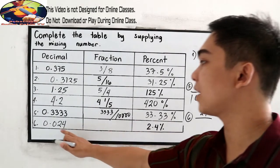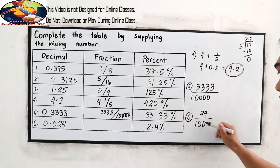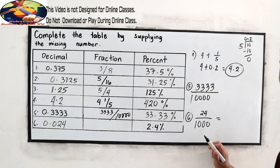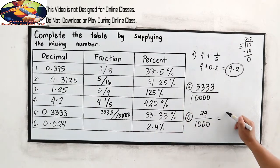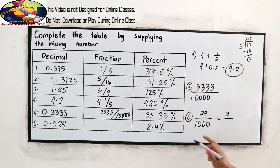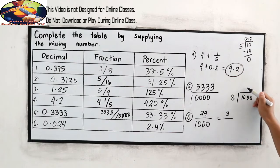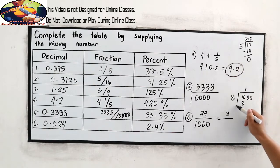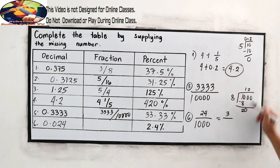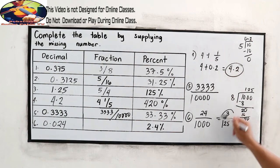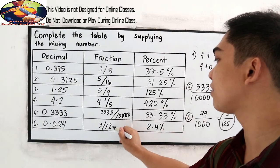Number 6. Copy 24. We have 3 decimal places so that will be 1,000 in our denominator. 24 and 1,000 are divisible by 8. So 3 over 1,000 divided by 8. 1 times 8 that is 8. Subtract 2 bring down 0. 20 divided by 8 that is 2 then we have 16. 4 bring down 0. 5 so 125. So that is 3 over 125.